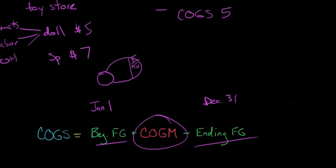So what we do is ignore the ending finished goods. We deduct those, we subtract those out. And then the remainder of this pile, that's the stuff that went out the door. This is the cost of goods sold.